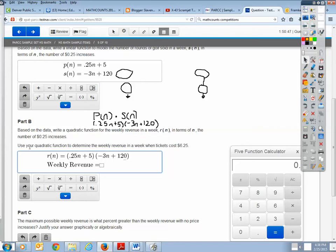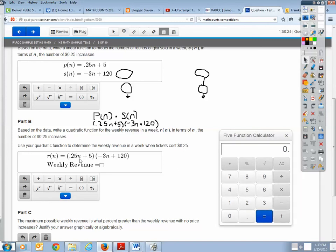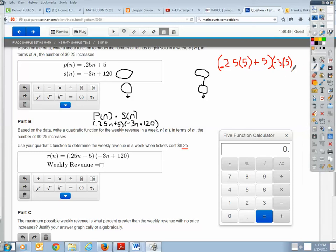And so it says use your quadratic function to determine the weekly revenue when the ticket costs are $6.25. Well, how many increases have I had at $6.25? Well, that would be 5 because 5 times 25 is $1.25. So let's go ahead and use my calculator. So we have 0.25 times my N value of 5, which is how many increases I need to have to get $6.25, plus 5 because that was my equation.